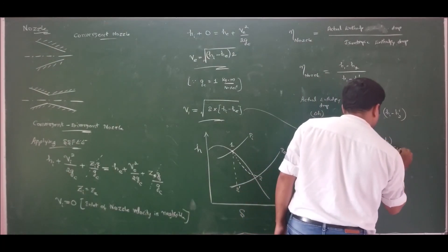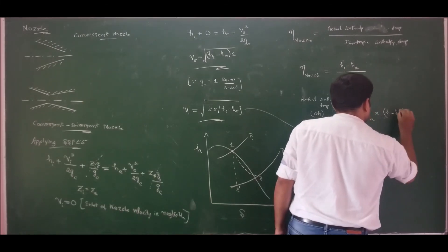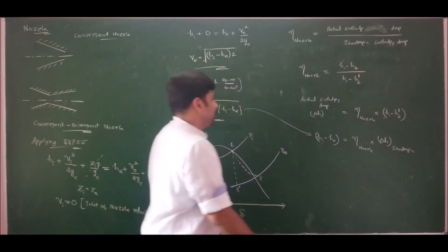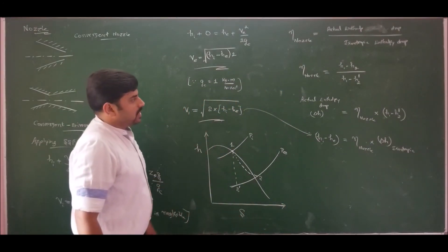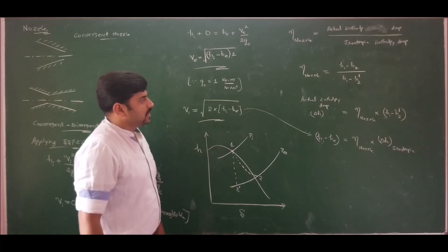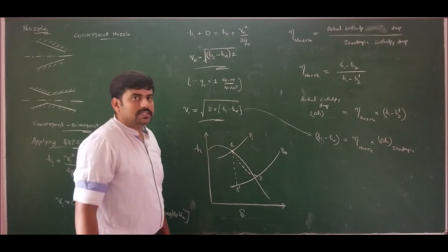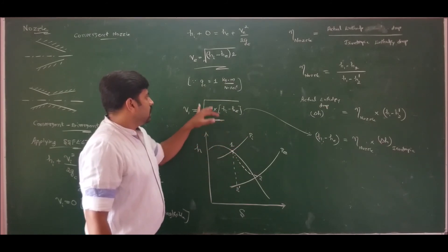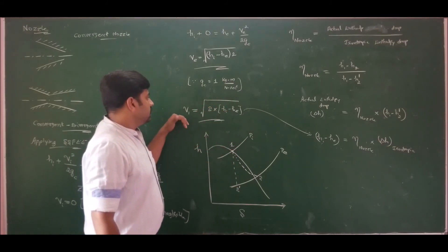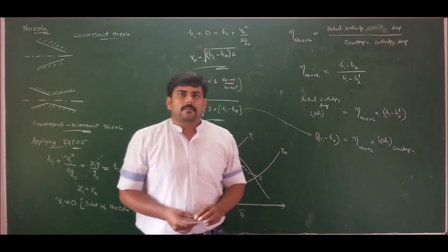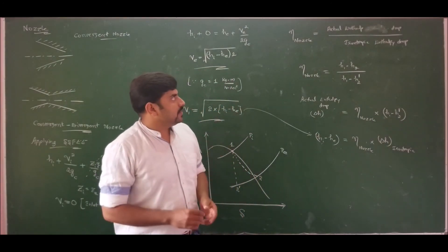Using the Mollier chart, find the isentropic enthalpy change and apply the nozzle efficiency to get the actual enthalpy drop. Then using actual enthalpy drop multiplied by 2 under the square root gives the entry velocity of steam to the rotor. Let me pause this video so you can note it down.